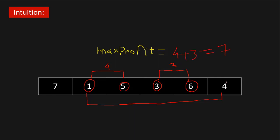The next element is 4, which is less than the previous element, so we are done. At the end we return max profit, which equals 7. For this input we return 7. This is how we solve this problem.